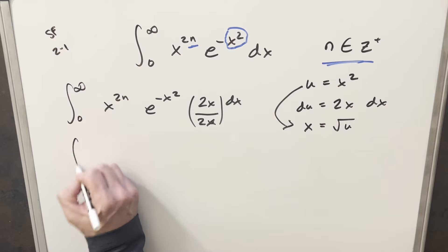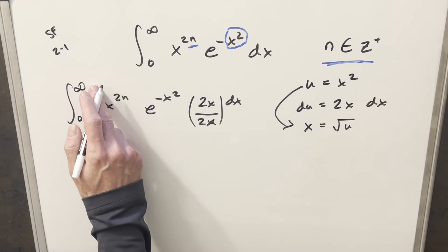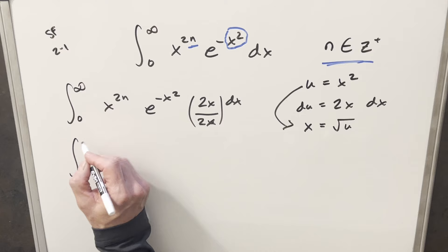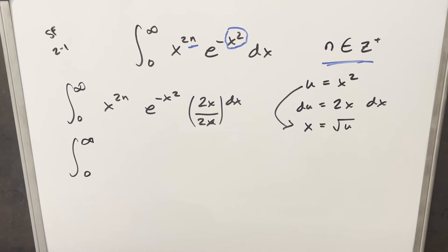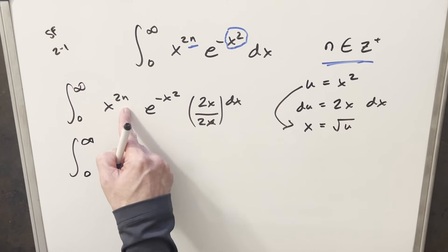And then we'll have all the other stuff. I'll just copy that down. Okay, so now we'll just go ahead and substitute. So first of all, updating our bounds. We plug in infinity. Infinity squared is still going to be infinity. And we plug a 0 in and we still get 0 for the lower bound.